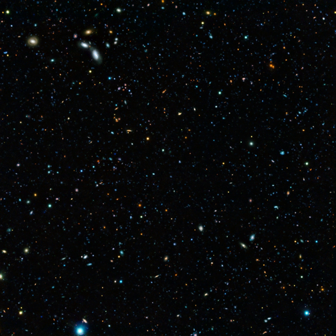UKIRT Infrared Deep Sky Survey UKIDSS, a collection of ground-based Southern Hemisphere surveys GPS, GCS, LAS, DXS, UDS using the WFCAM camera on UKIRT, some wide and some very deep, in Z, Y, J, H, and K bands, 2005.